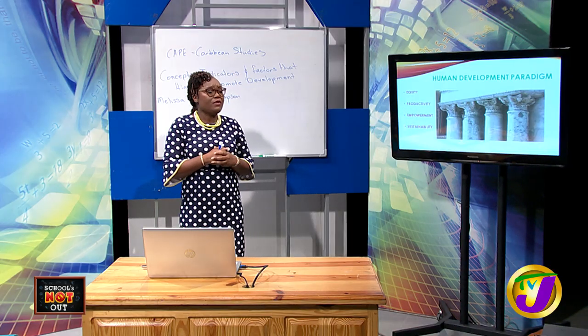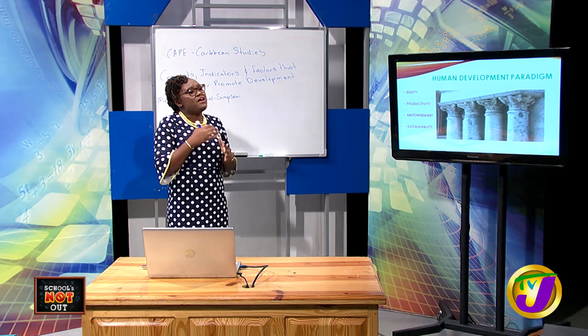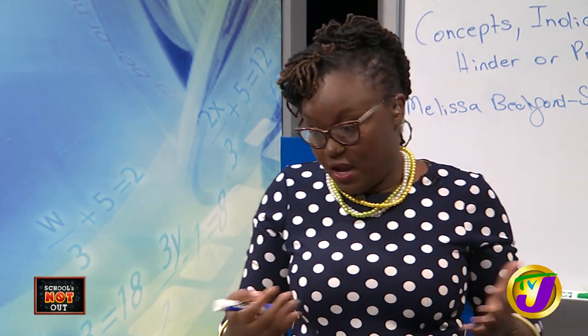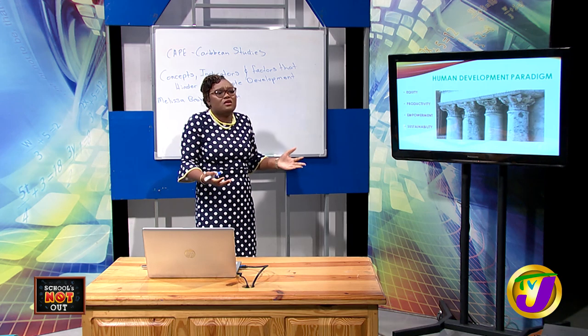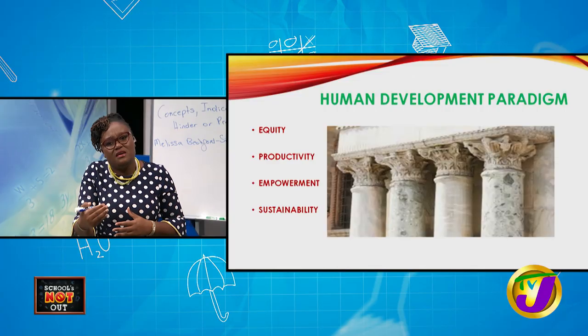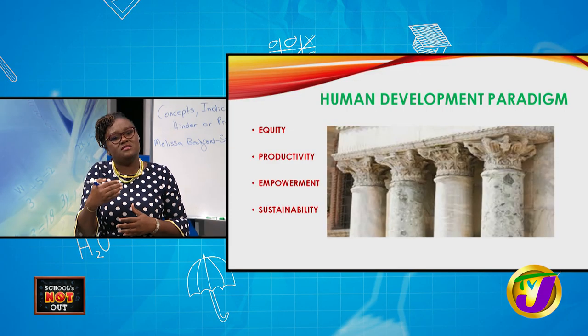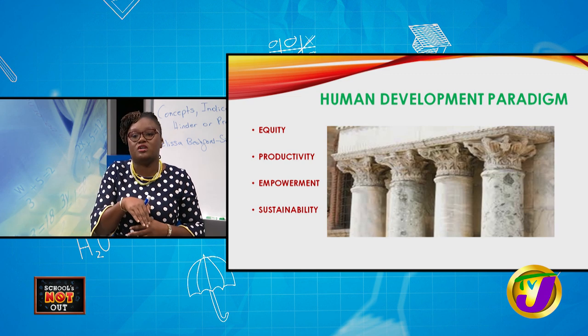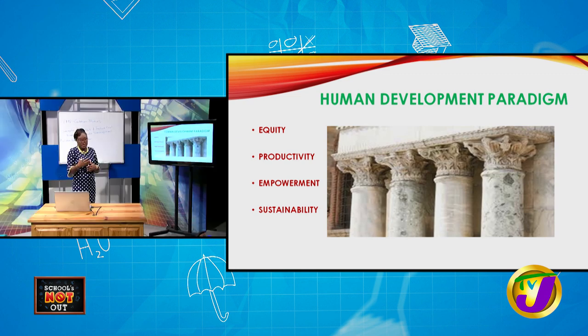Productivity looks at levels of movement in the country in terms of output — people feel productive when there is equal access. Empowerment asks: how do I feel? Do I feel good about living in this country? Do I feel good as an individual? Sustainability looks at how we are able to maintain these gains over time, not just for the present generation but for generations to come. All of the pillars are intertwined.